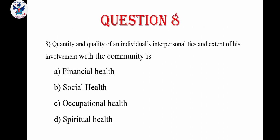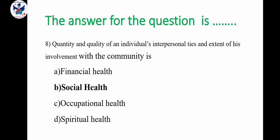Question number 8. Quantity and quality of an individual's interpersonal ties and extent of his involvement with the community is: A. Financial health, B. Social health, C. Occupational health, D. Spiritual health. The correct answer is option B, Social health.